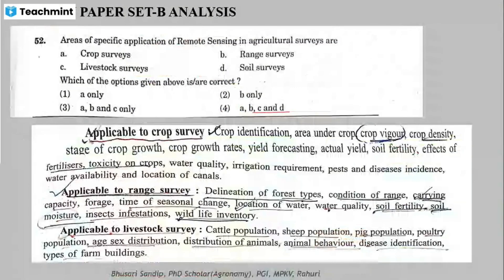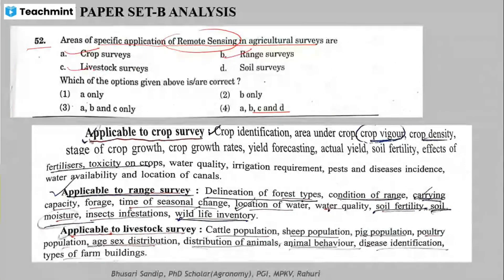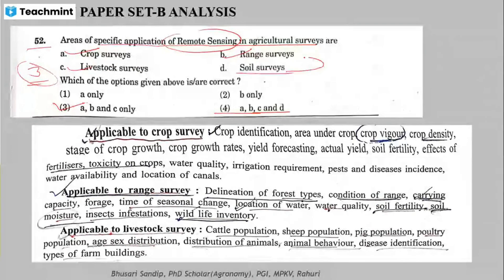Question 52: specific applications of remote sensing in agriculture — in the context of range survey, the applications include crop survey, range survey, and livestock survey. The correct answer includes crop survey, range survey, and livestock survey. Soil survey is not applicable here.